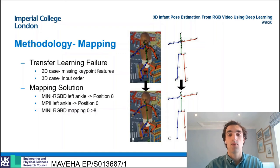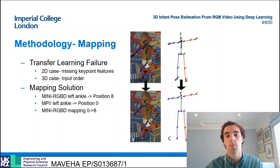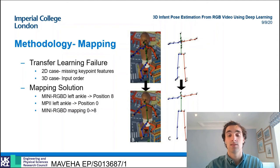Therefore, for the mini RGBD dataset, position 8 is mapped to position 0. The figure on the right shows a visualization of this mapping process for the infant and adult 3D datasets to the MPII definition.